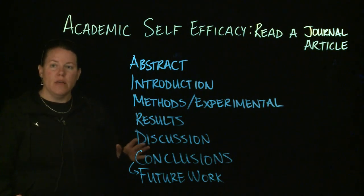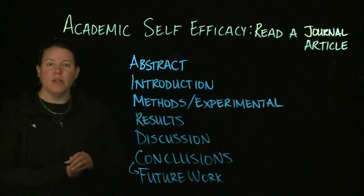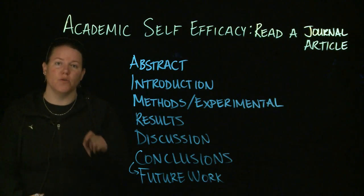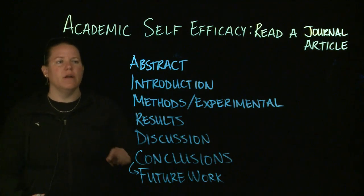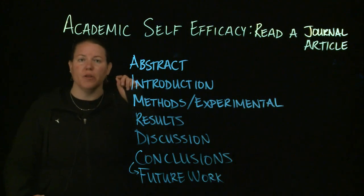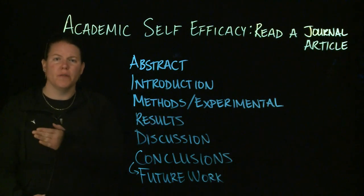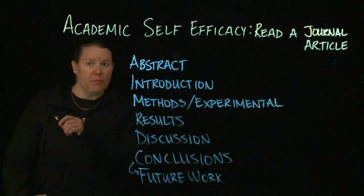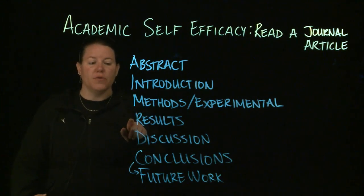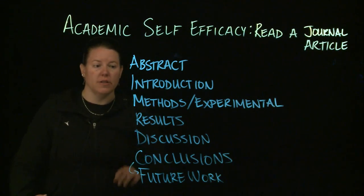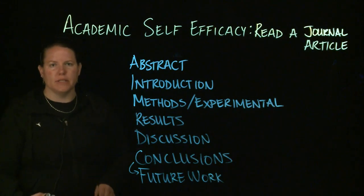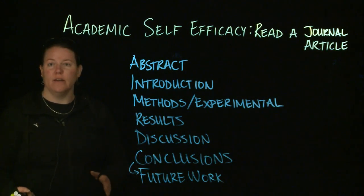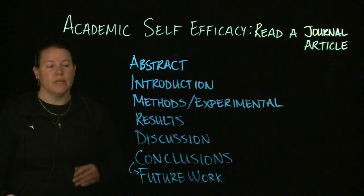If you are going to reproduce this work, or if it is a really important article in your field or important to your research advisor, then you read the abstract, you read the introduction — which gives you the background information and tells you all the articles that were really important before this one, all of that previous work used to do this experiment. You read the results, you read the discussion, you read the conclusions. You still skip the method section unless you're going to reproduce it — then you go through that in detail.